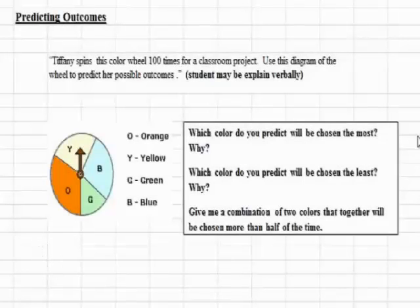In this lesson, we're going to talk about predicting outcomes. Predicting outcomes is basically when you're asked a question and you predict what's going to happen or what the result or answer is going to be.